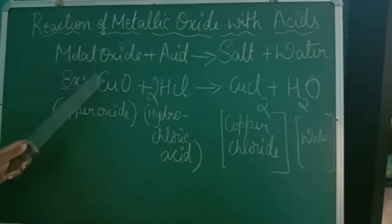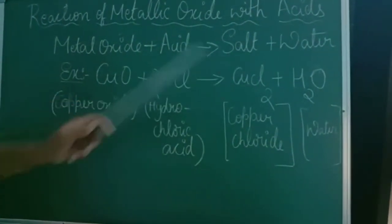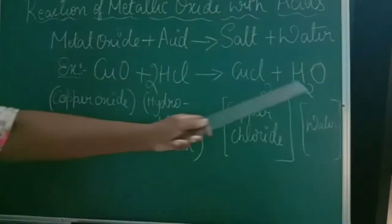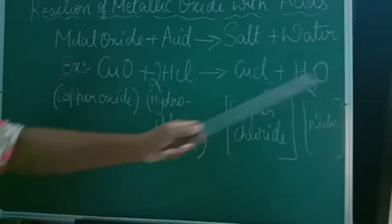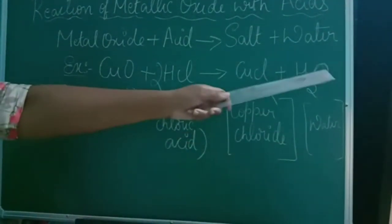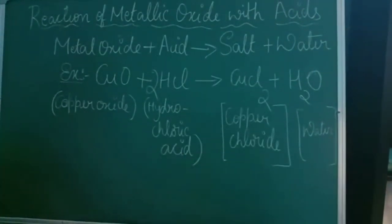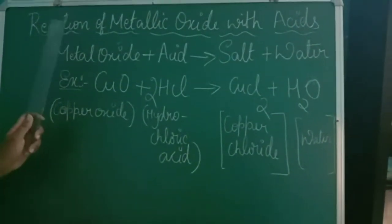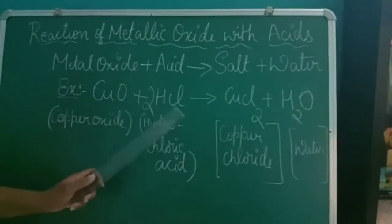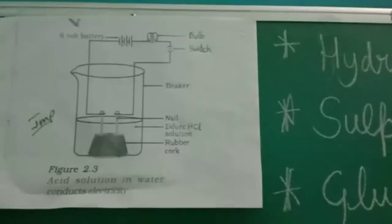Copper is going to form a bond with the Cl and forms CuCl₂. Hydrogen is going to form a bond with the oxygen to form H₂O, wherein CuCl₂ is nothing but copper chloride, and H₂O, as you all know, is a water molecule. Finally, we can say that when the reaction of a metal oxide with acid takes place, we obtain salt as well as water.